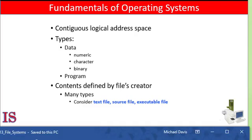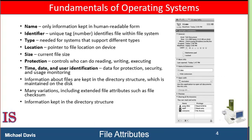The information in a file is defined by its creator. Many different types of information may be stored in a file: source or executable programs, numeric or text data, photos, music, video, and so on. A file has a certain defined structure which depends on its type. For example, a text file is a sequence of characters organized in lines and possibly pages. A source file is a sequence of functions, each further organized as declarations followed by executable statements. An executable file is a series of sections that the loader can bring into memory and execute.